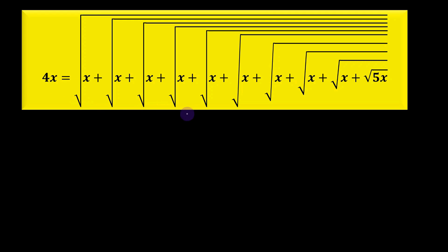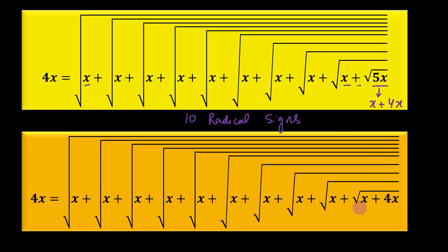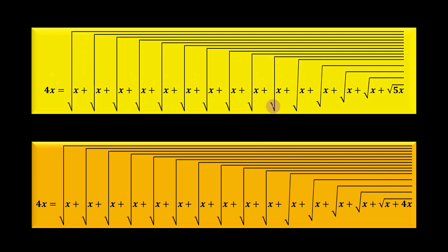Here you can see that we now have 10 radical signs. The expression becomes 4x equals the square root of x plus onwards and onwards plus x plus the square root of 5x, and then again this 5x can be written as x plus 4x. So again we are going to get a similar expression, and again we are going to replace the original value of 4x, thereby getting an expression with 15 radical signs.